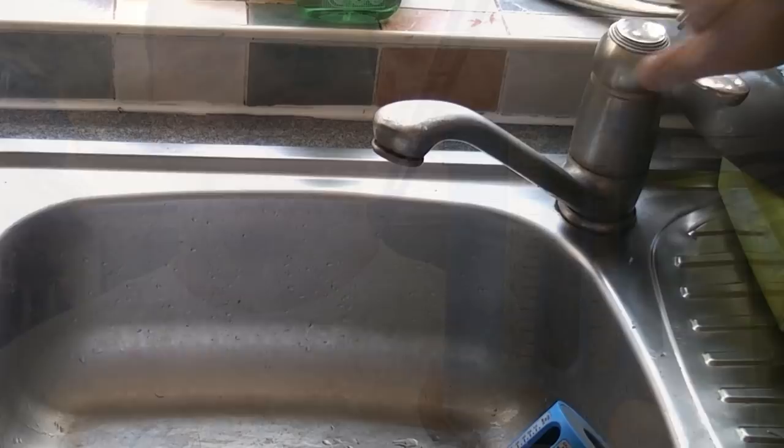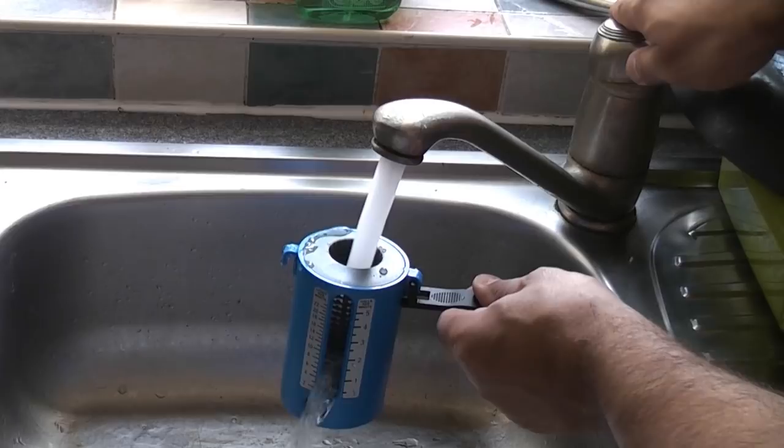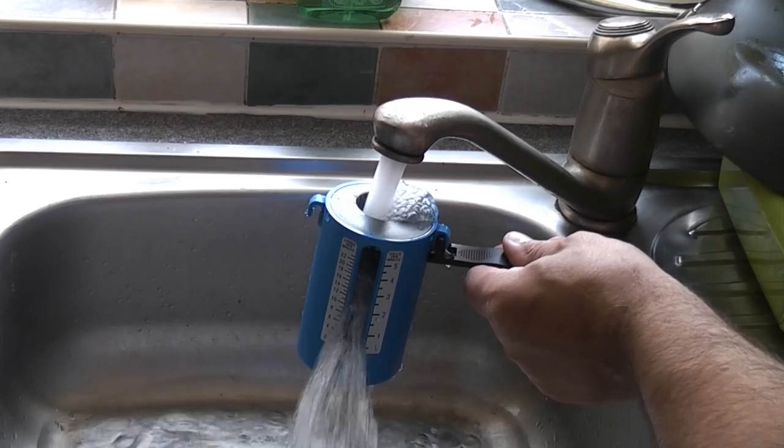We're now in the kitchen. I've got the tap turned so that the handle is in the cold-only position. I'm now going to open the tap and measure the flow rate. With the tap fully open, you can see that we're getting between 14 and 16 litres per minute.